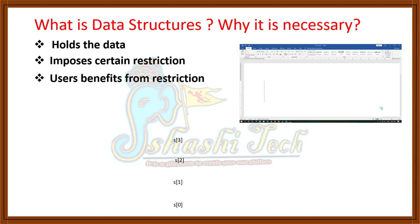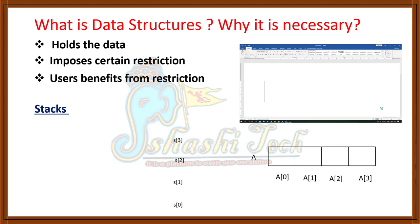Let us see the definition of a data structure. Data structure is something which holds the data and imposes certain restrictions on it where the user is getting a benefit from the restriction. I will consider stack as an example to explain the definition. Stack is a derived product of an array. In an array, you can directly insert an element at the 0th position. This is not possible in the stack because it follows the LIFO principle — last-in-first-out.